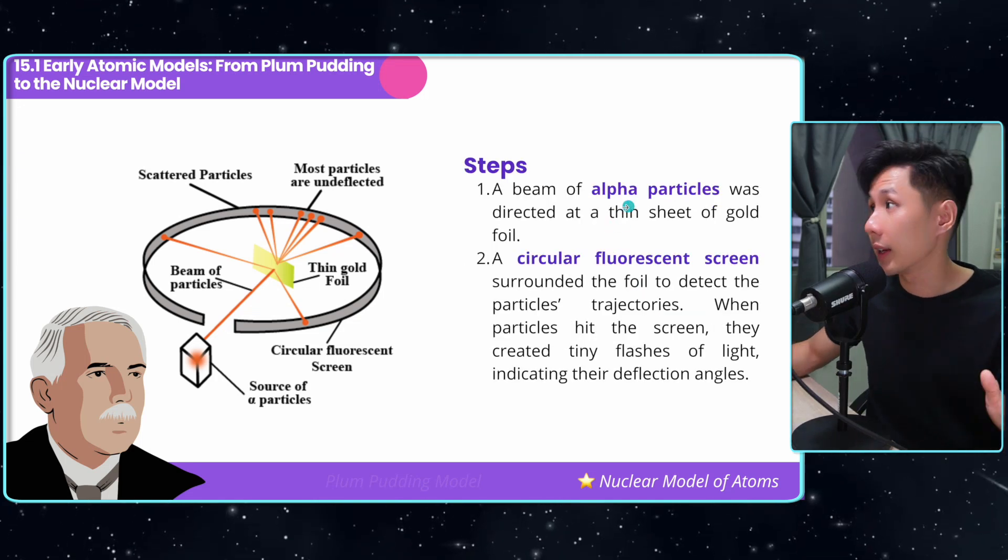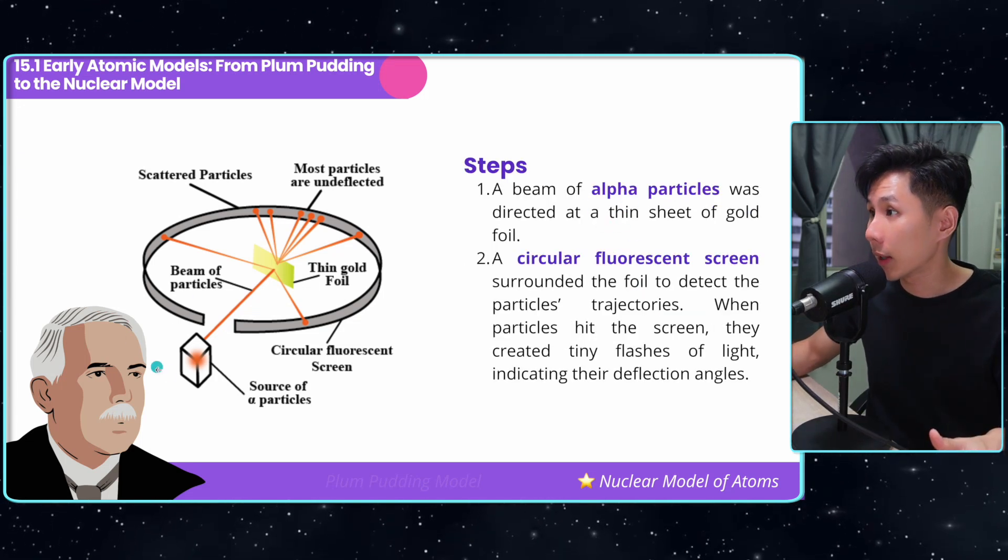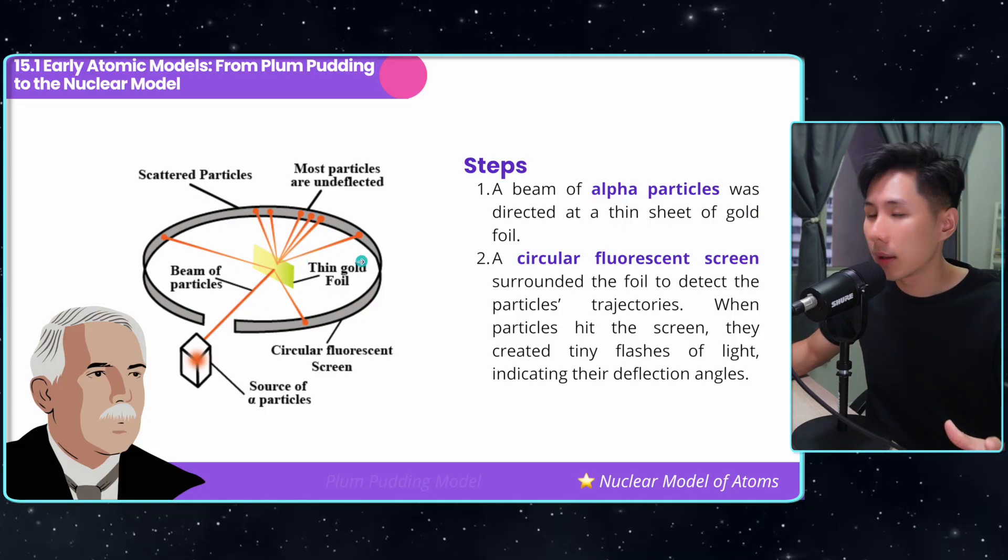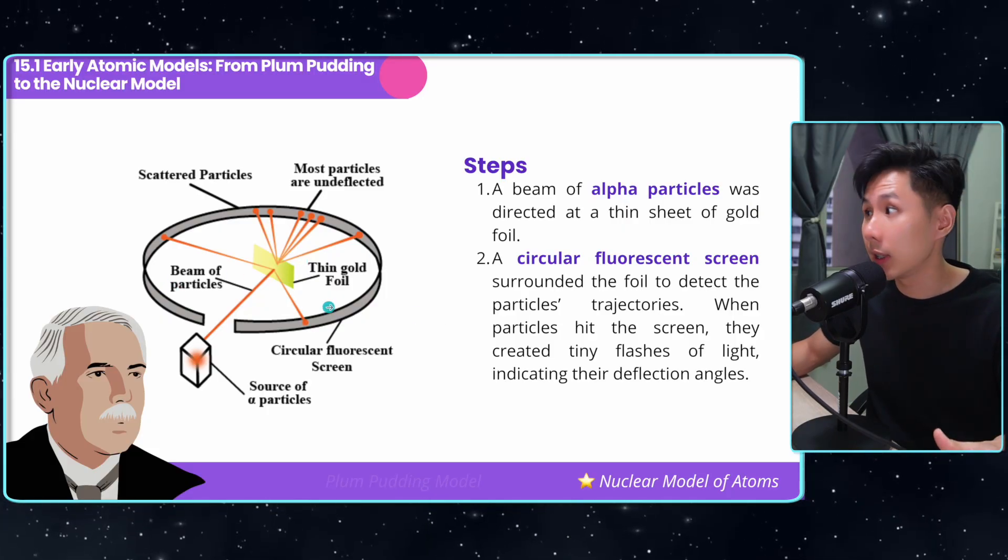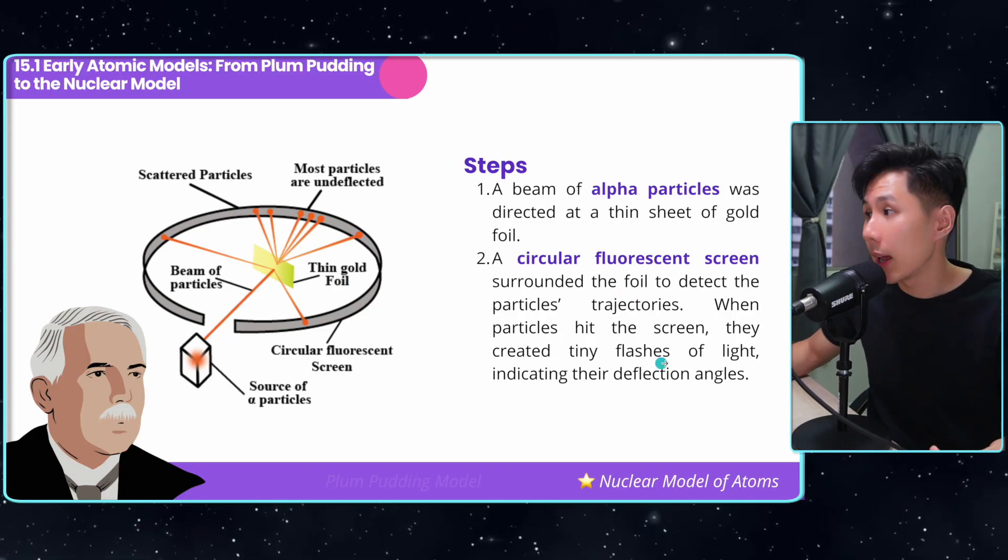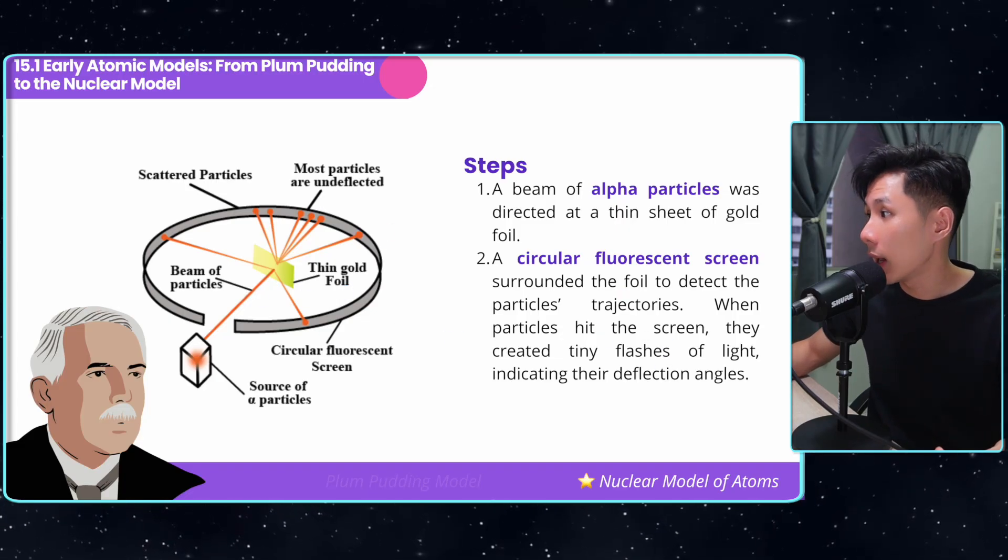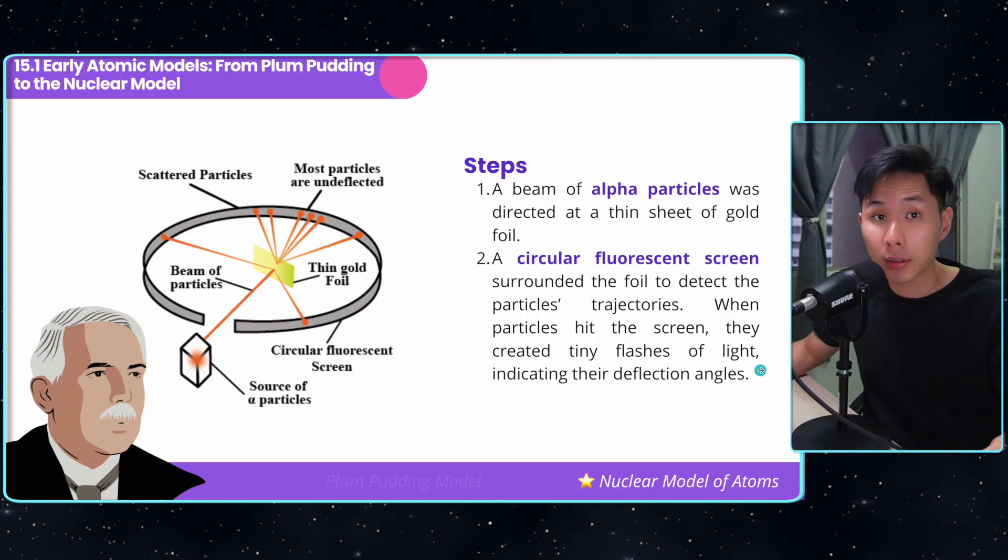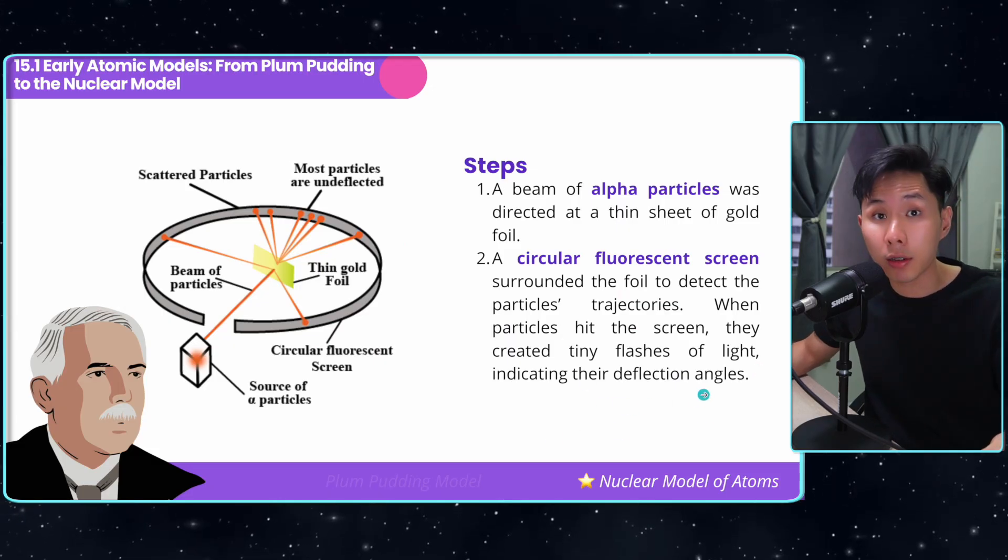This is how the experiment looked like. A beam of alpha particles were directed at thin sheets of gold foil. There's this circular fluorescent screen that detects the particle's trajectory. When particles hit the screen, they created tiny flashes of light, indicating their deflection angle.